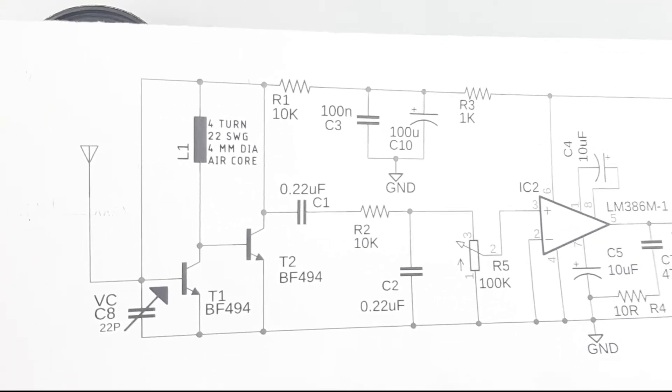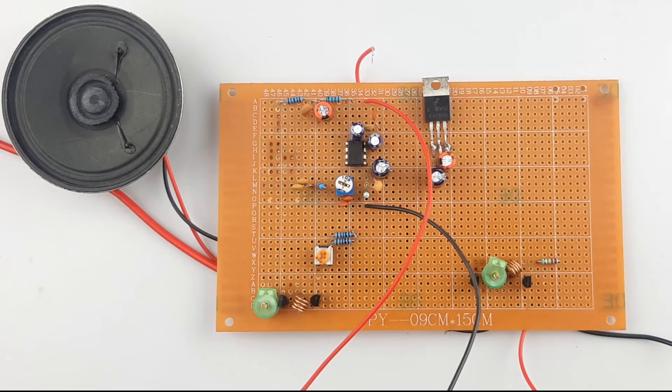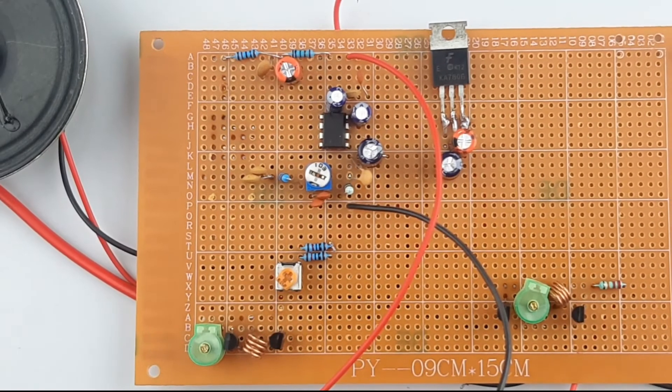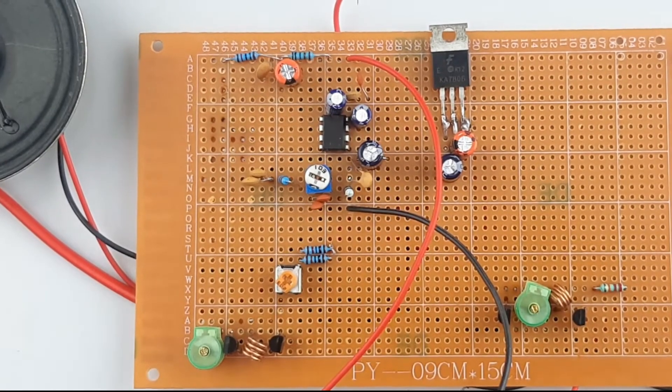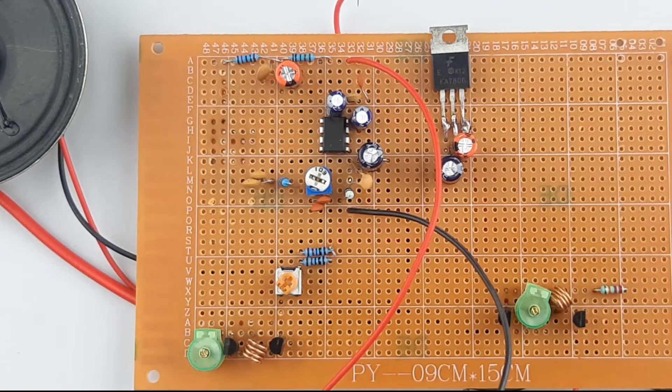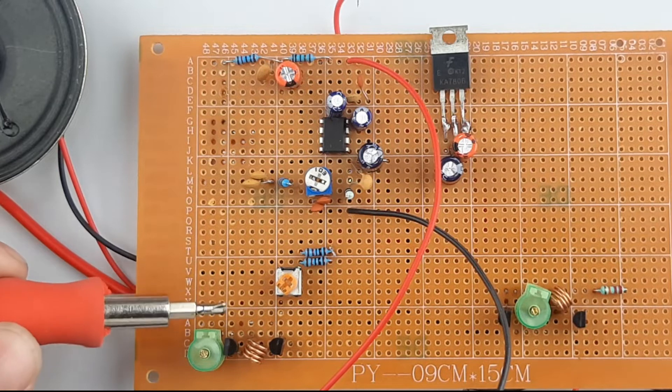As you can see, we have the circuits in front of me right now. There are two circuits I built with two different versions that I found on the internet. This circuit over here is made with the BF494 transistor, which is this schematic right here. This circuit somewhat works, and I'll show you by testing it.